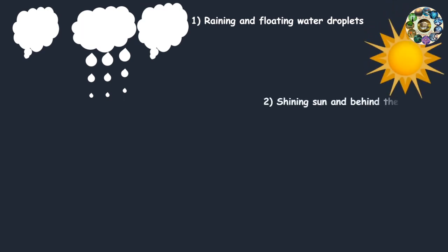Second, the sun must be shining and needs to be behind the viewer. The sun needs to be low in the sky, at an angle of less than 42 degrees above the horizon. The lower the sun in the sky, the more of an arc of a rainbow the viewer will see.